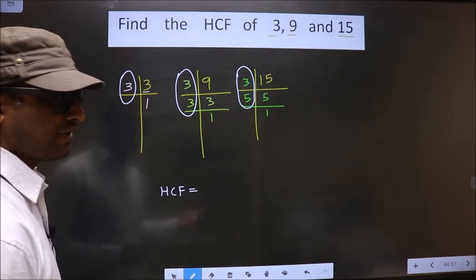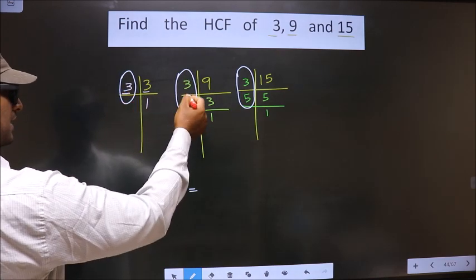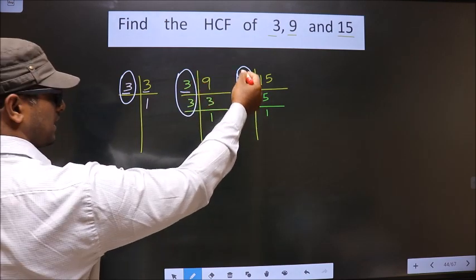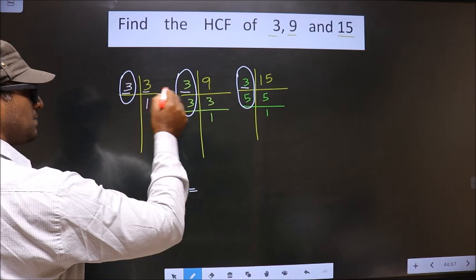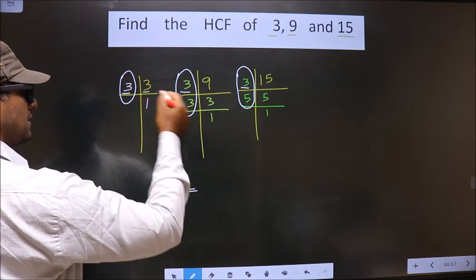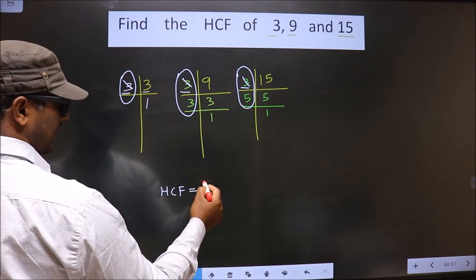So let us find, starting with the number 3. Do we have 3 here? Yes. So go to the next number. Do we have 3 here? Yes. So 3 is present in all the three places. So you circle 3 and write it here.